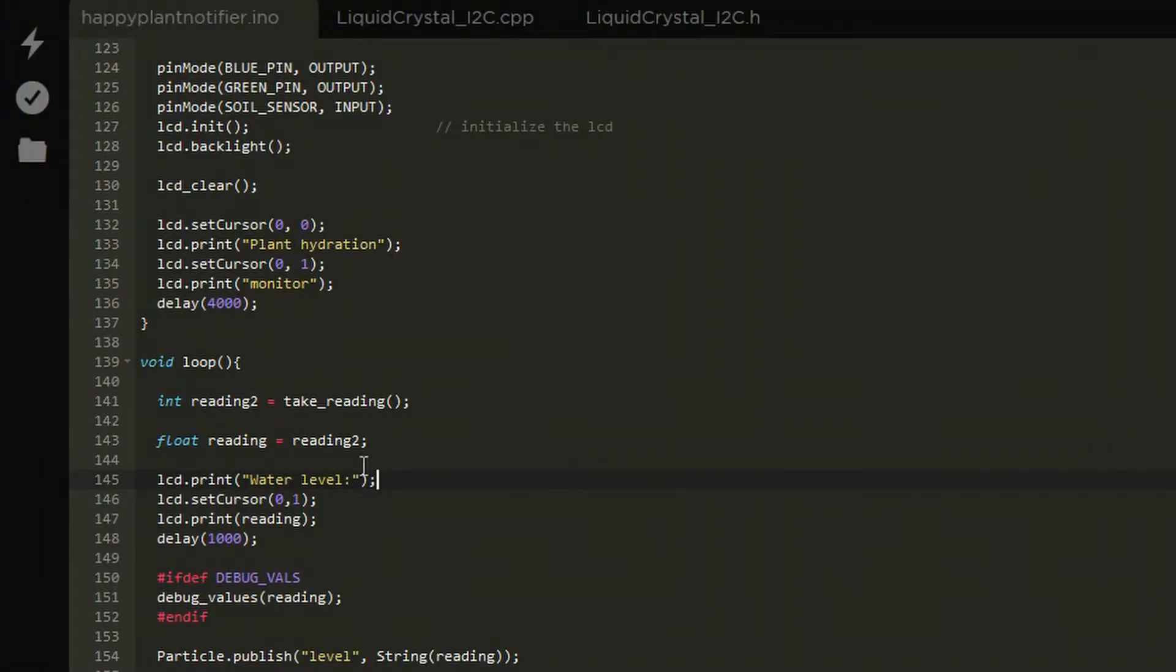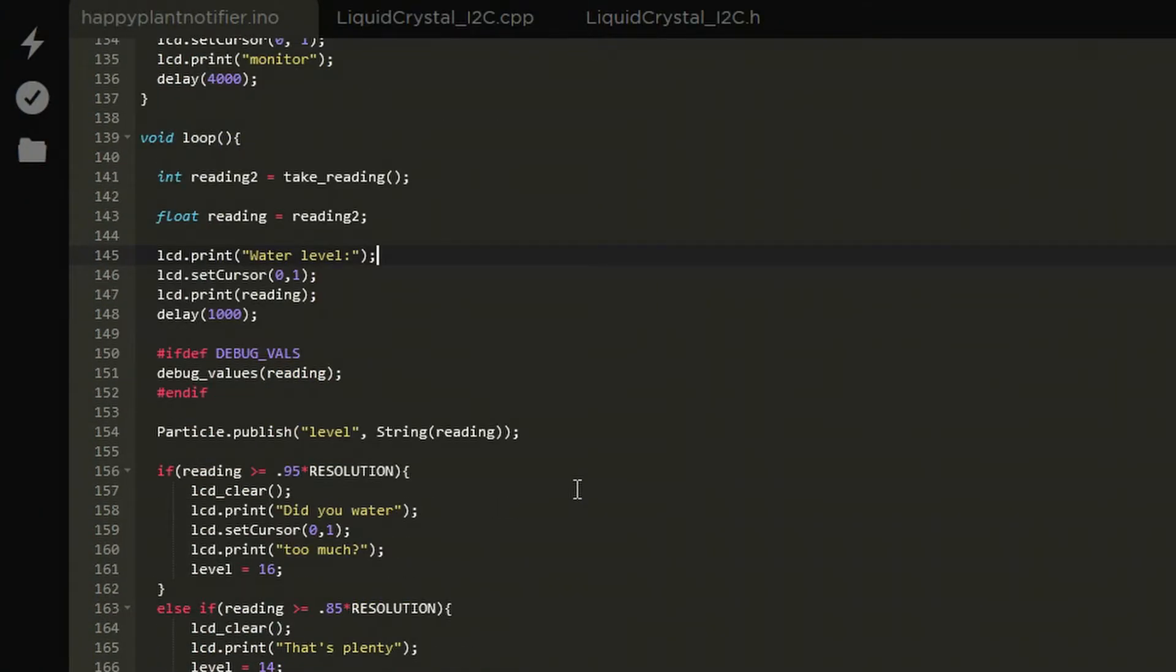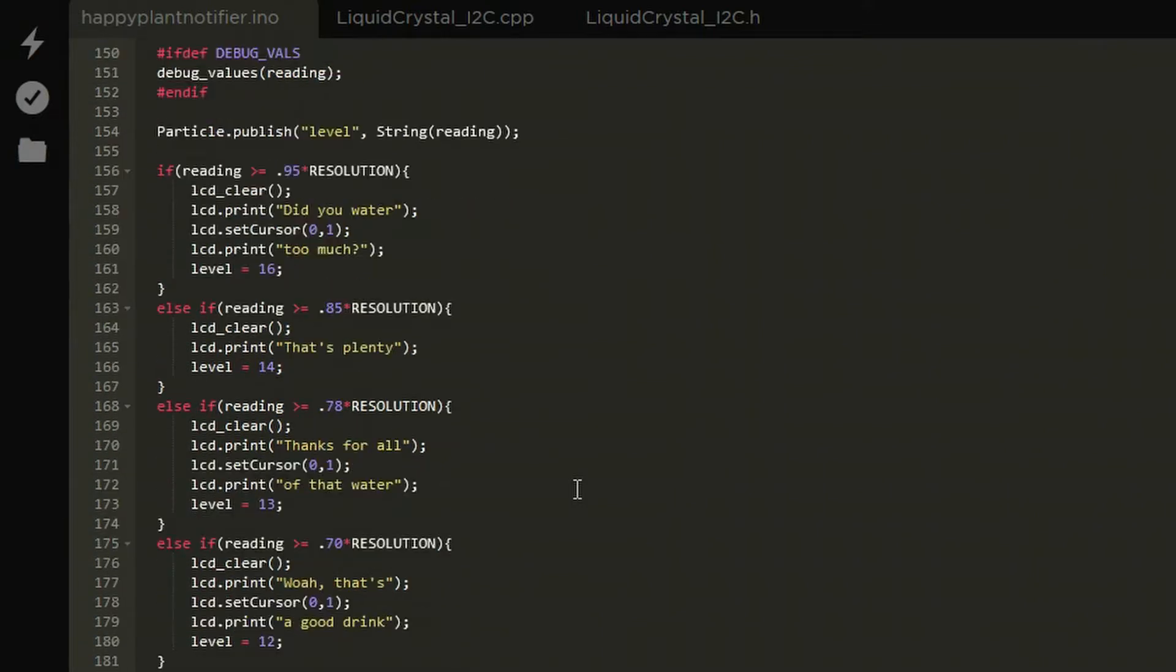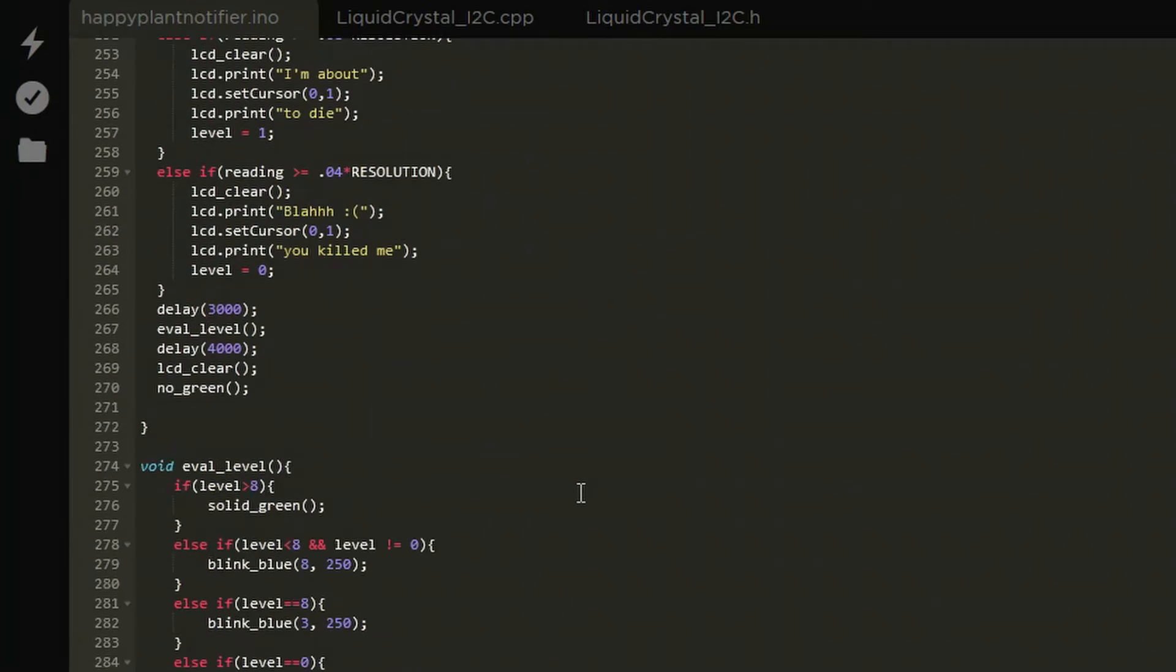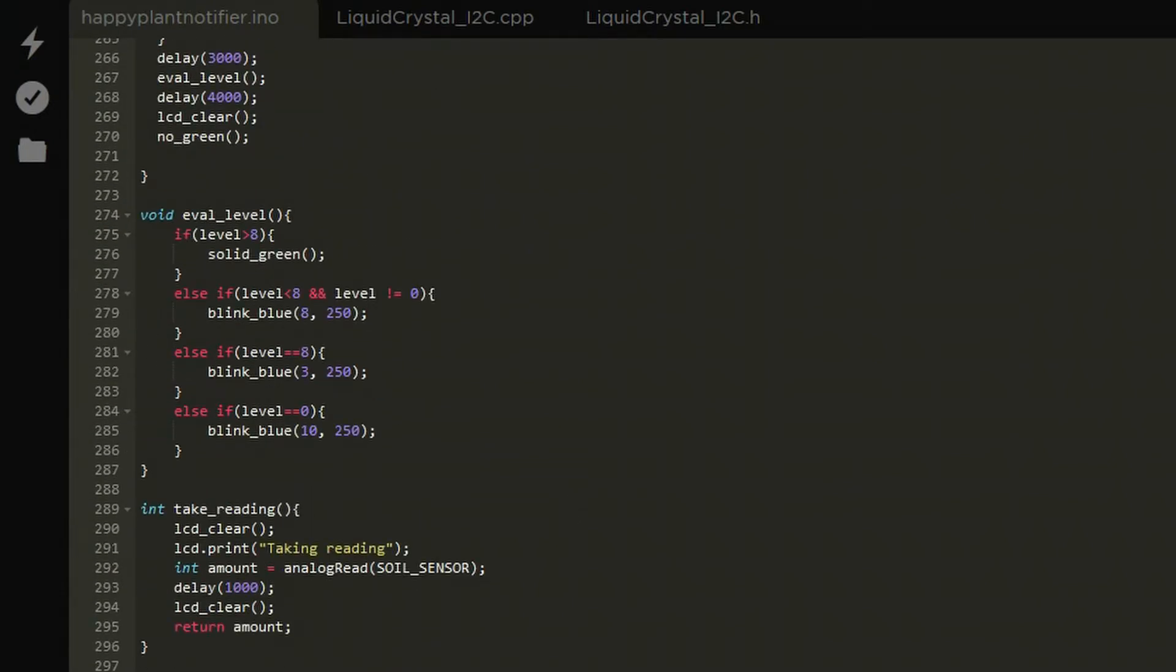I went to the Particle Photon Cloud IDE and loaded up the attached sketch, flashing it to my photon. The RGB LED on top blinked five times to notify me that it was powered and connected successfully.